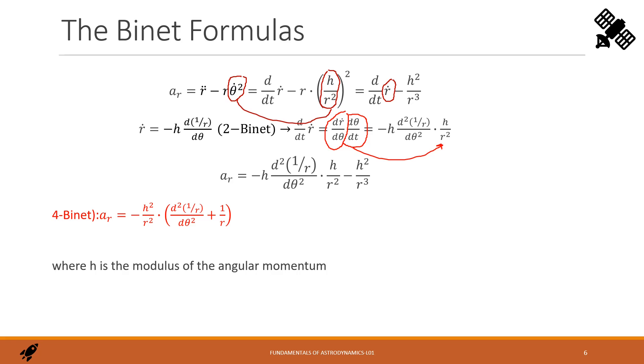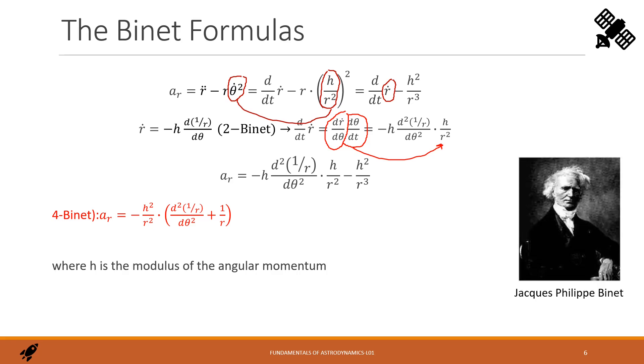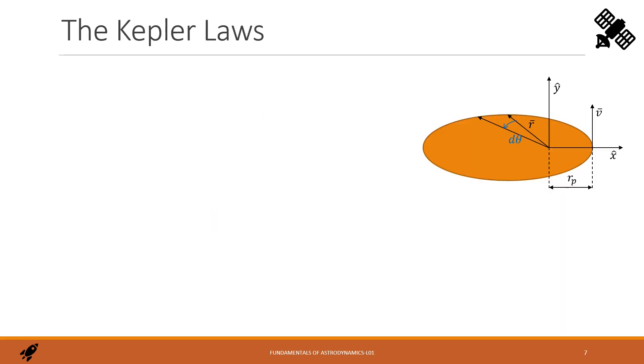The task of the Binet formulas is to express velocity and acceleration as function of the geometrical parameters only r and theta without the time any longer. And we actually succeeded. Thanks to the Binet formula we can now demonstrate the Kepler laws one by one. Let's start from the second.